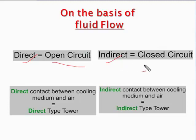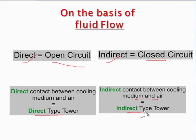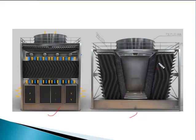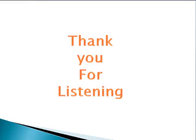In indirect type, fluid flows in a closed circuit with no direct contact between the cooling medium and air. Direct type means direct contact between cooling medium and air; indirect type means indirect contact. We can see two cooling towers shown here: one is a counter flow cooling tower, where both fluid directions are opposite in the vertical direction, and the other is a cross flow cooling tower. Now the class is over. Thank you for listening.